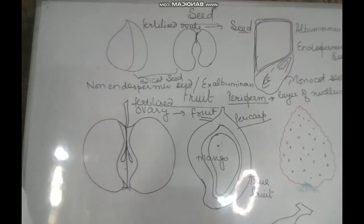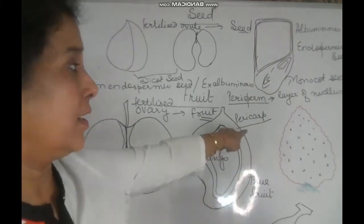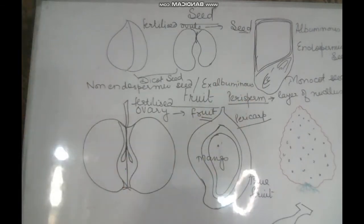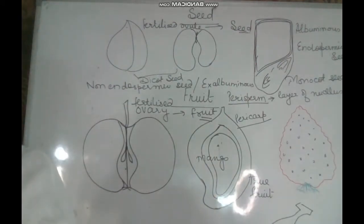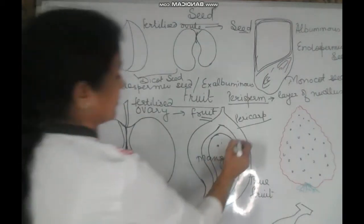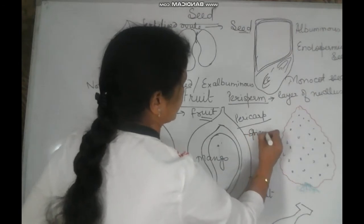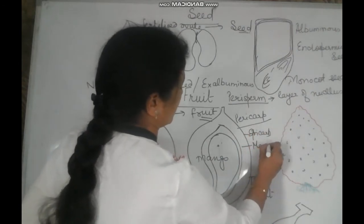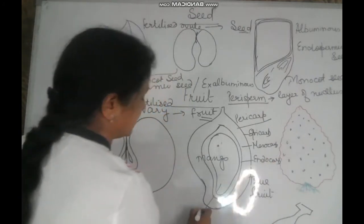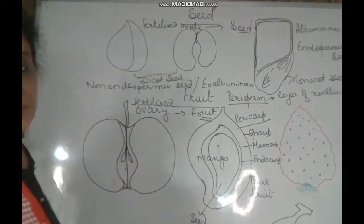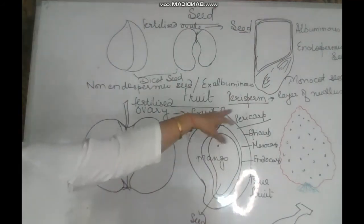Students, you should know the difference between pericarp and perisperm. Perisperm is the leftover layer of the nucellus. And pericarp — the wall of the ovary develops into the wall of the fruit, that is called pericarp. In the case of mango, the pericarp is divided into three parts: outer epicarp, fleshy mesocarp, and the hard endocarp. And inside this there is the seed.